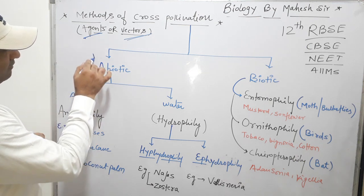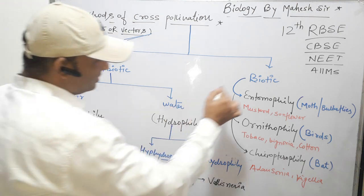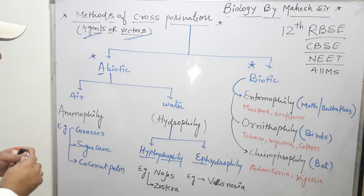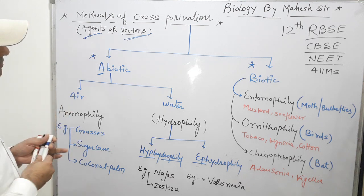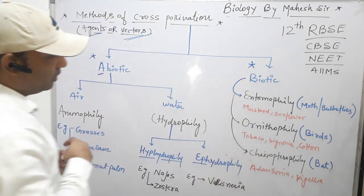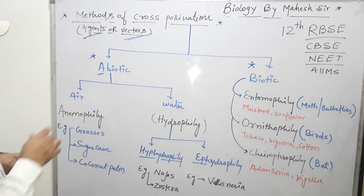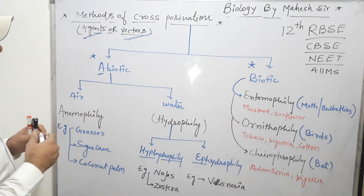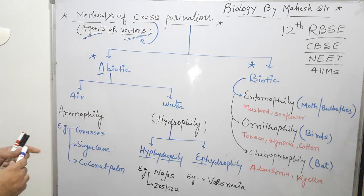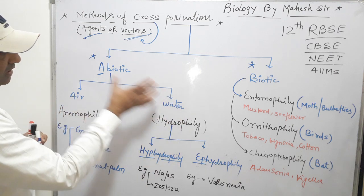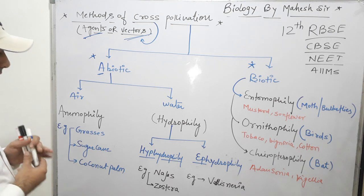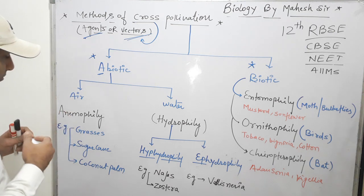We can classify the methods and agents in two ways: first is abiotic agents and second is biotic agents. Abiotic agents means all non-living things involved in pollination, and biotic agents means living organisms involved in pollination. For cross-pollination, abiotic vectors like air and water are involved.